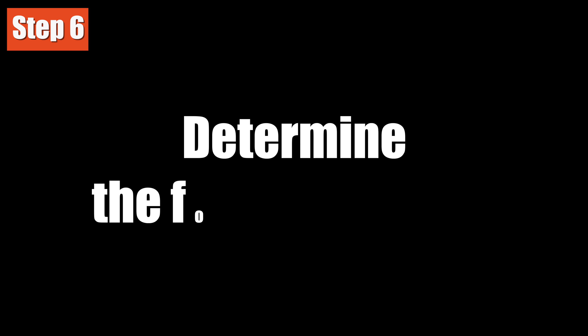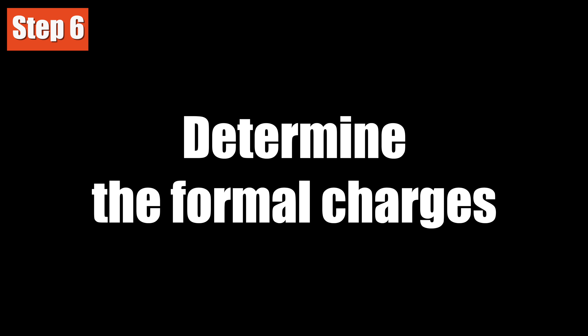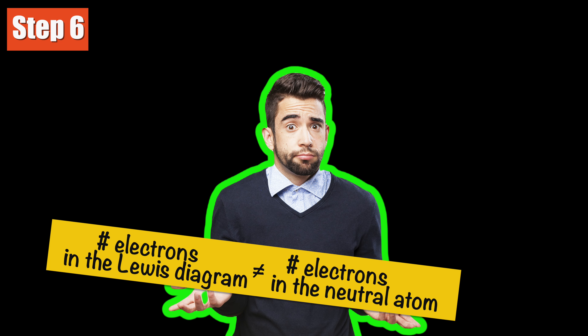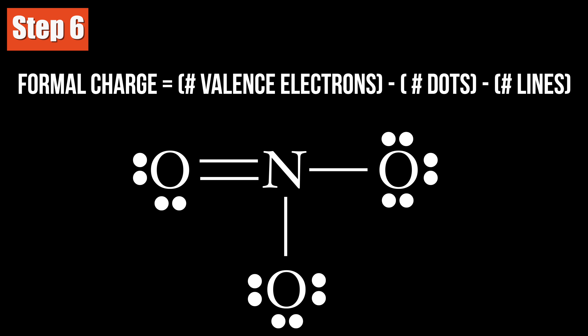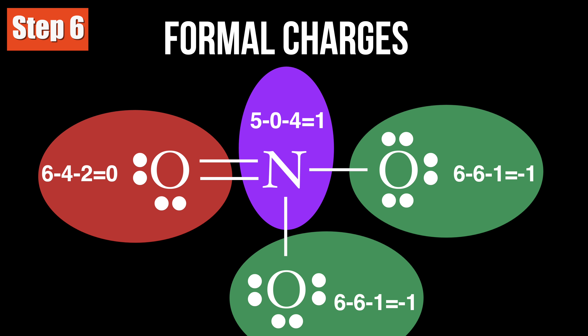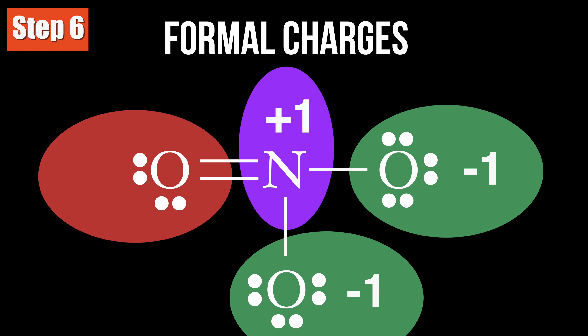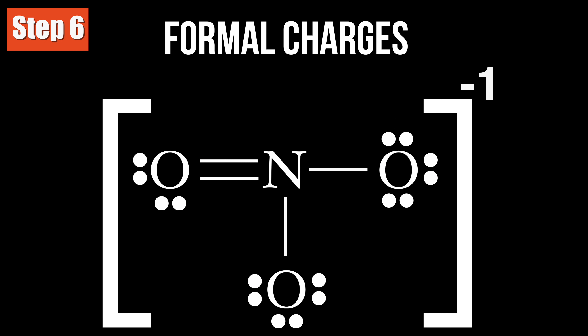Step 6: Determine the formal charges for all of the atoms. Sometimes, an atom in the Lewis diagram has a formal charge. It happens when the number of electrons in the Lewis diagram is different from its typical valence number. The formal charge of an atom is calculated by the number of valence electrons minus the number of dots minus the number of lines. Using this formula, the formal charges for the nitrate ion can be calculated. Commonly, only the net charge on the ion is shown in the Lewis diagram.